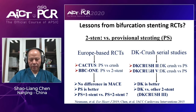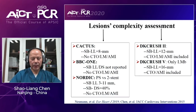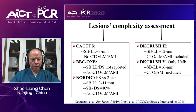From our DK CRUSH III study, we compared DK CRUSH with Culotte stenting technique for distal left main bifurcation lesions. A tremendous finding was a significant difference in lesion complexity. For example, in the CACTUS study, side branch lesion length was only 8 mm, and CTO, left main disease, and patients with acute myocardial infarction were not included in CACTUS, nor in BBC One and Nordic study. From the BBC One study, investigators did not report the side branch lesion length or diameter stenosis.